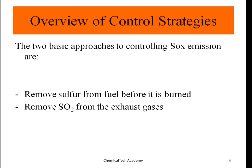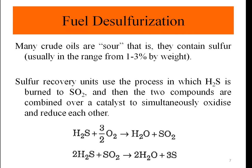The first strategy is fuel desulfurization. Many crude oils are 'sour,' meaning they contain sulfur ranging from 1 to 3% by weight — this is called sour crude oil or sour natural gas. 'Sweet' natural gas or sweet crude oil means the sulfur content is very low, less than 1%. We need processes like fuel desulfurization or gas sweetening to remove or reduce sulfur content, which means we emit less SO2 or SO3.